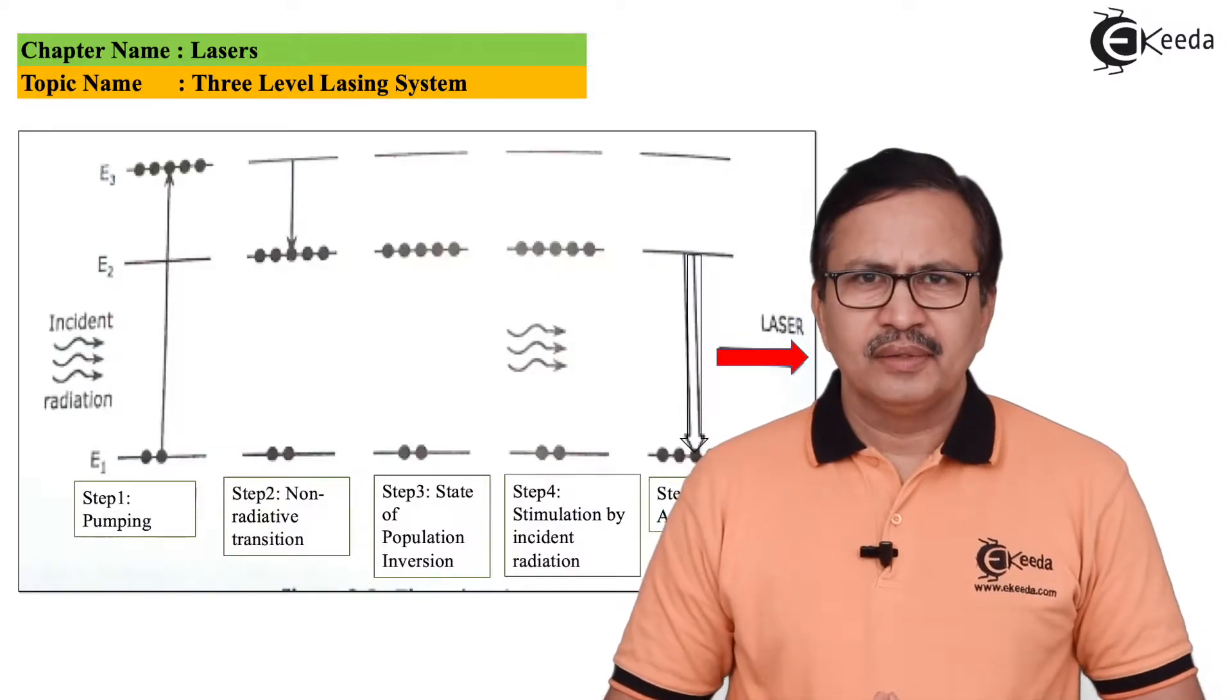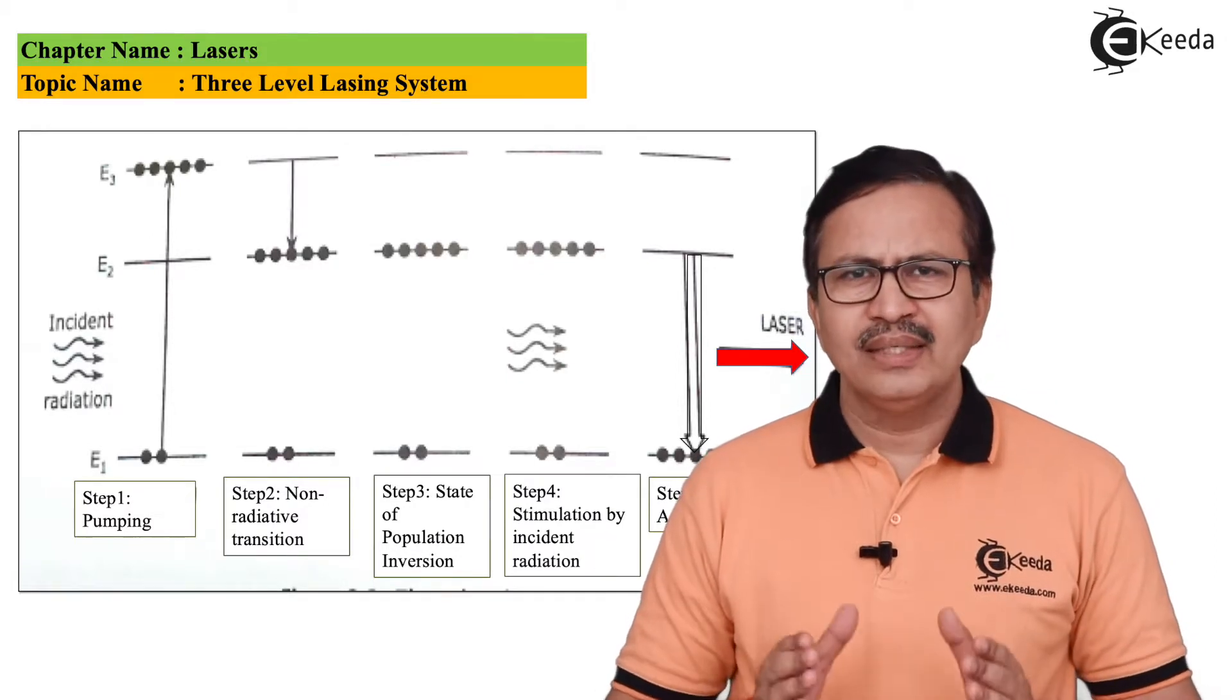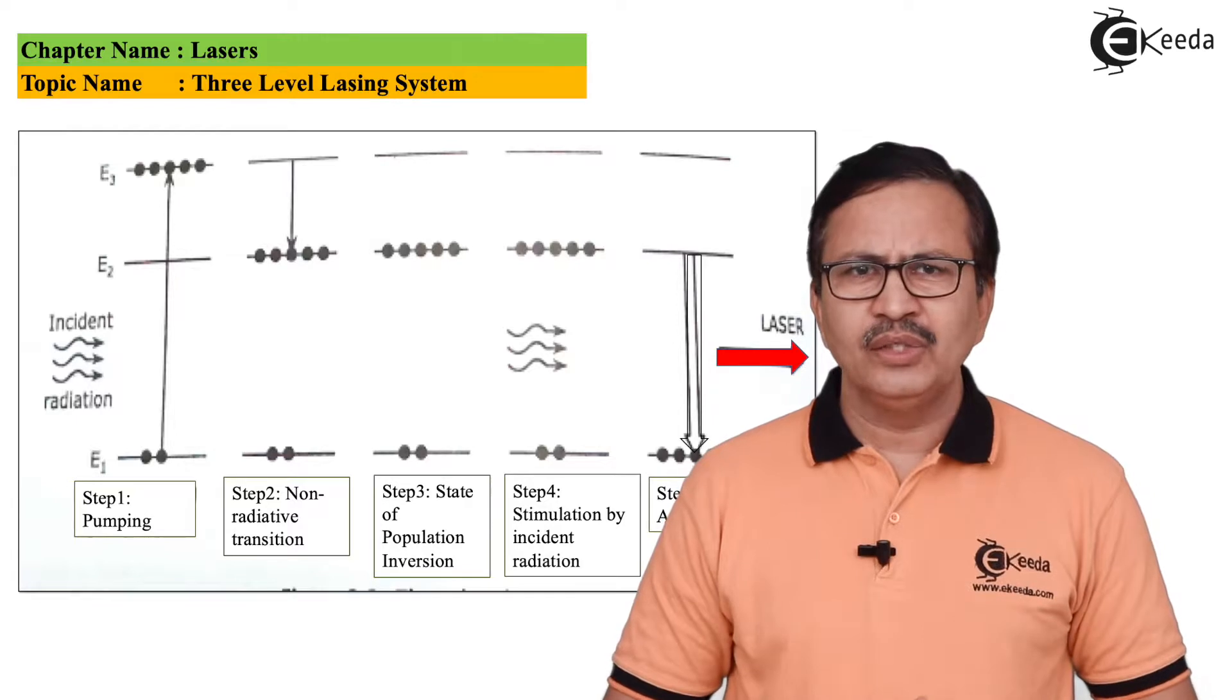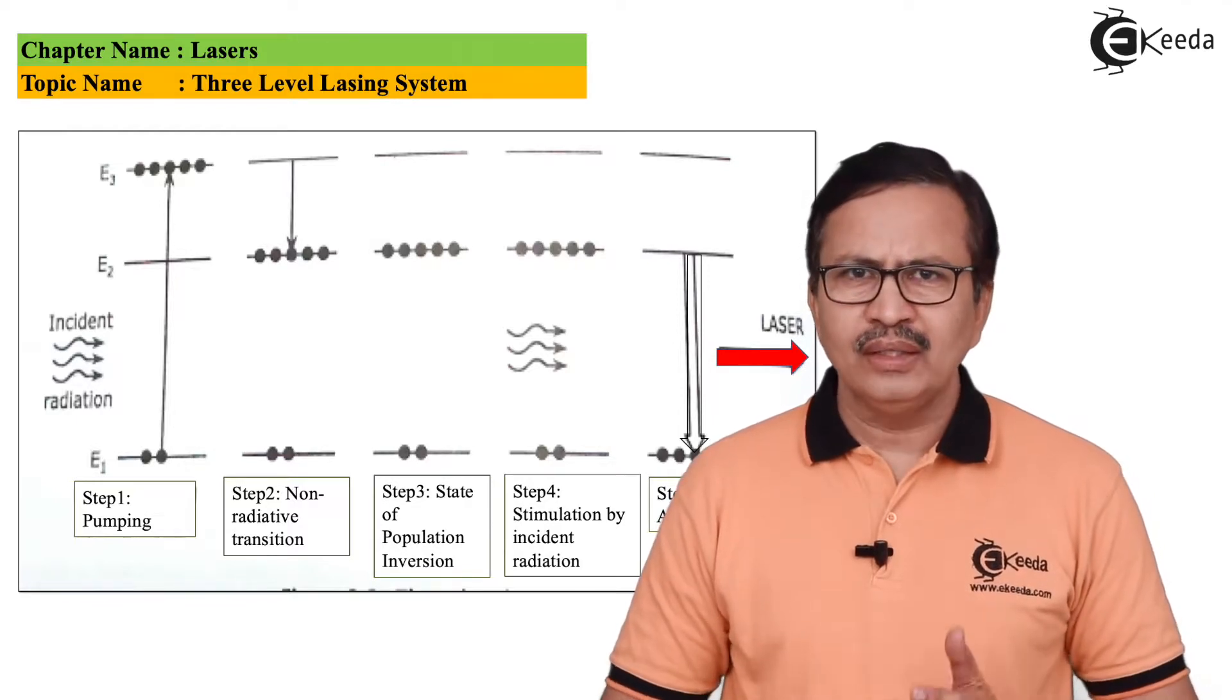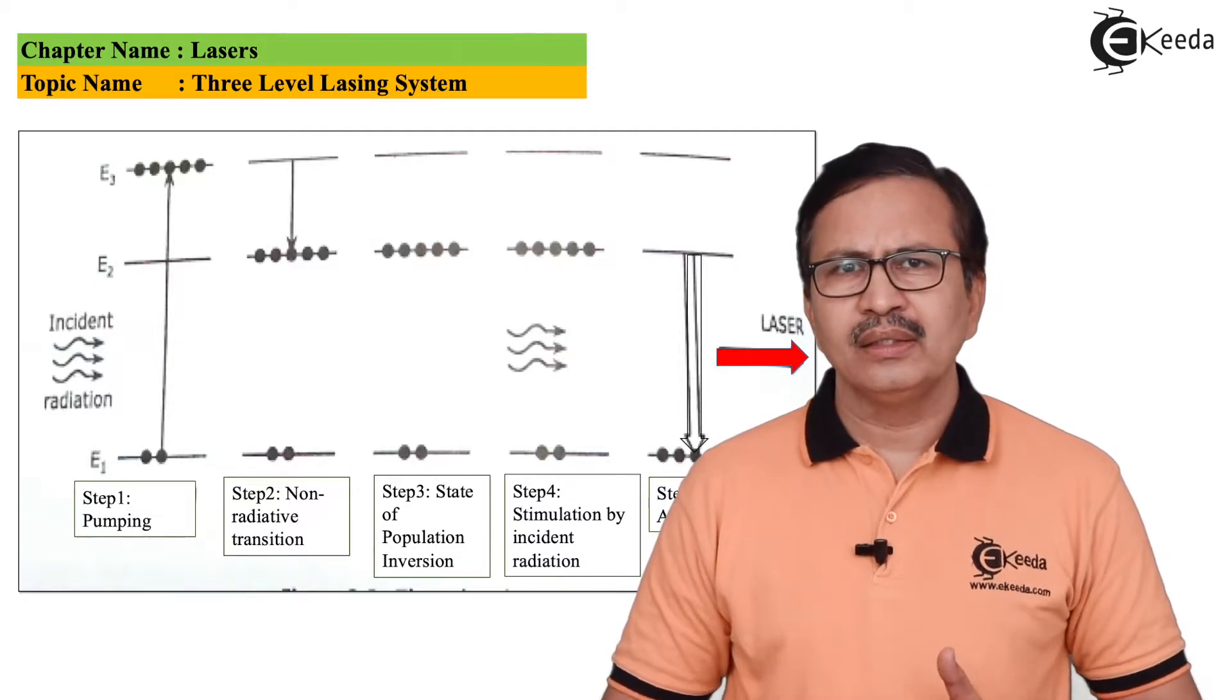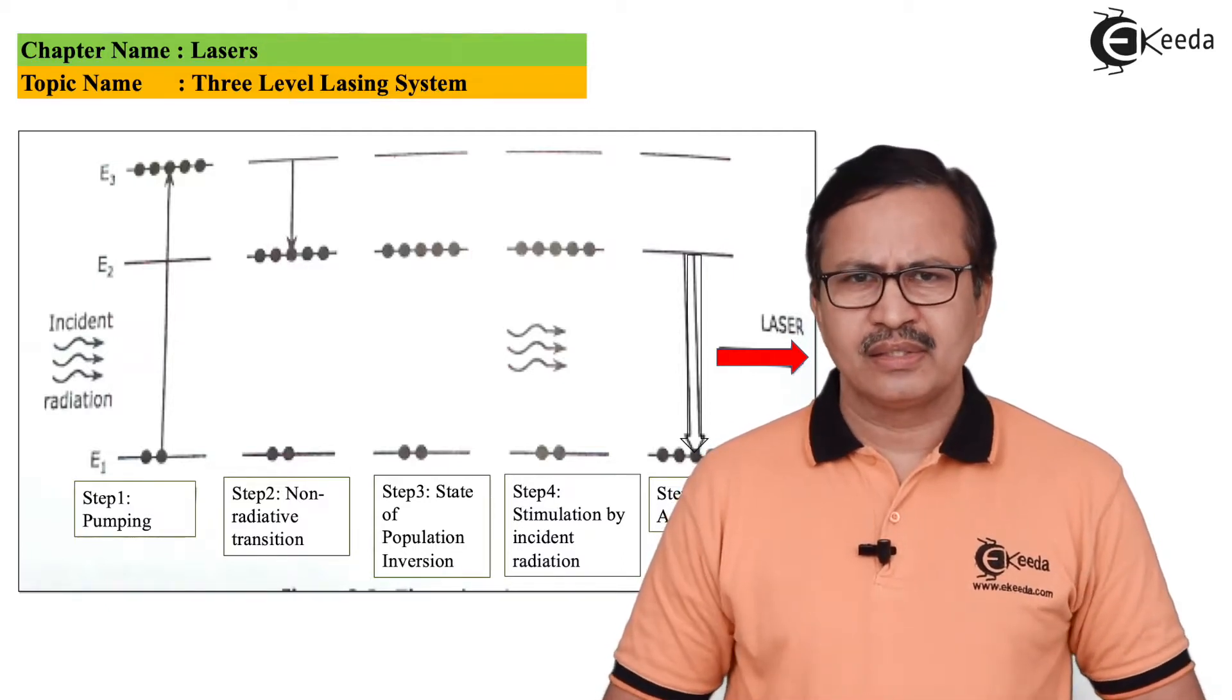In a laser, assume that the lasing material is having three energy levels E1, E2, and E3, wherein E1 is the ground state, E2 is the metastable state, and E3 is the excited state.